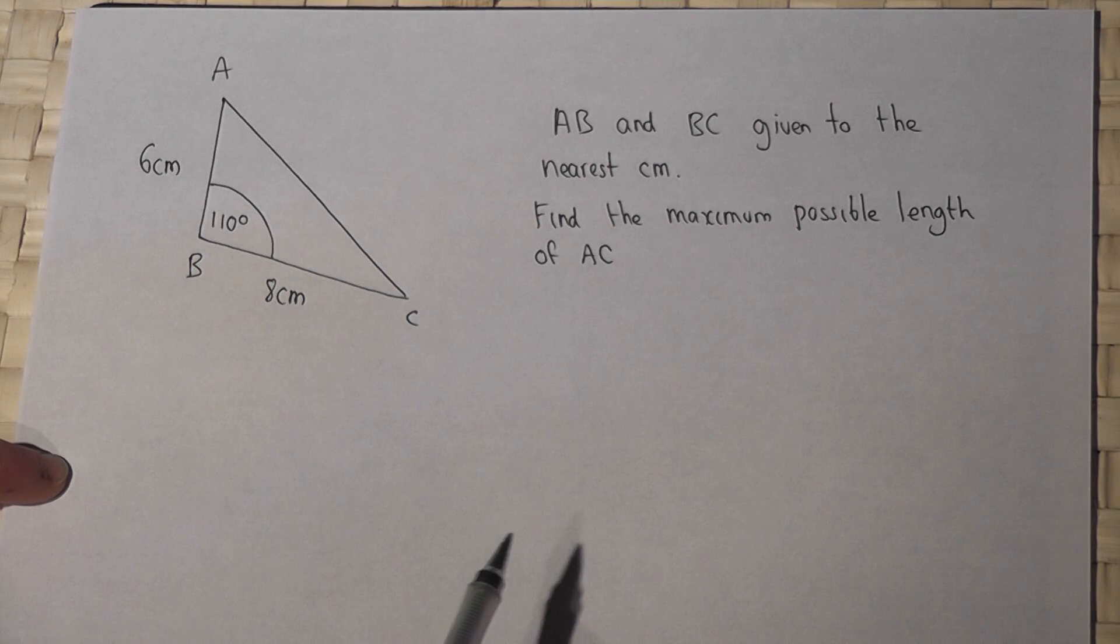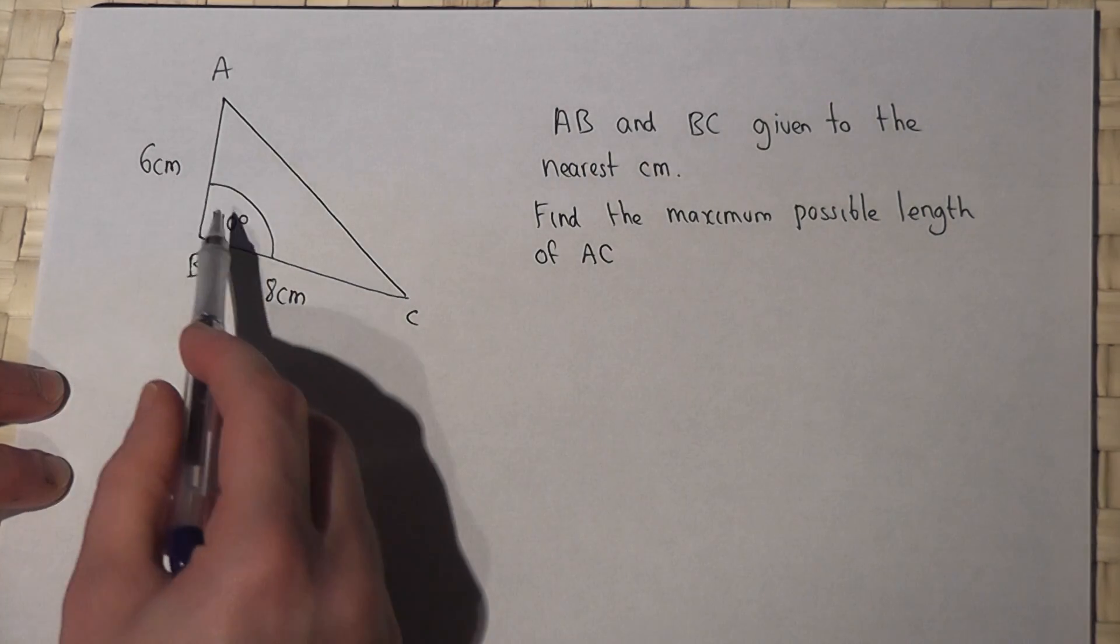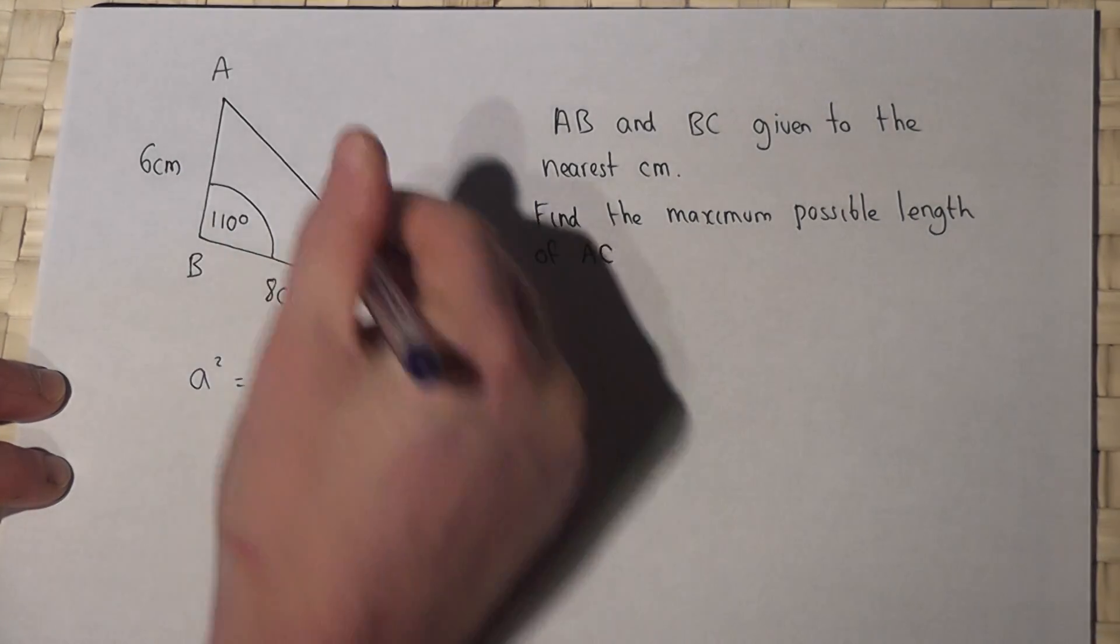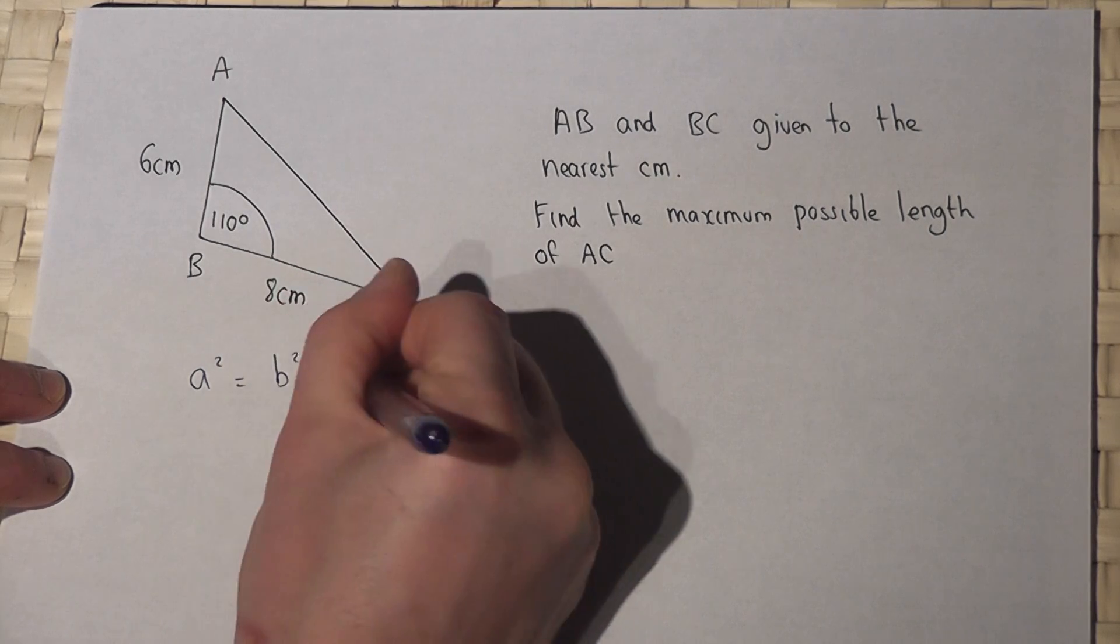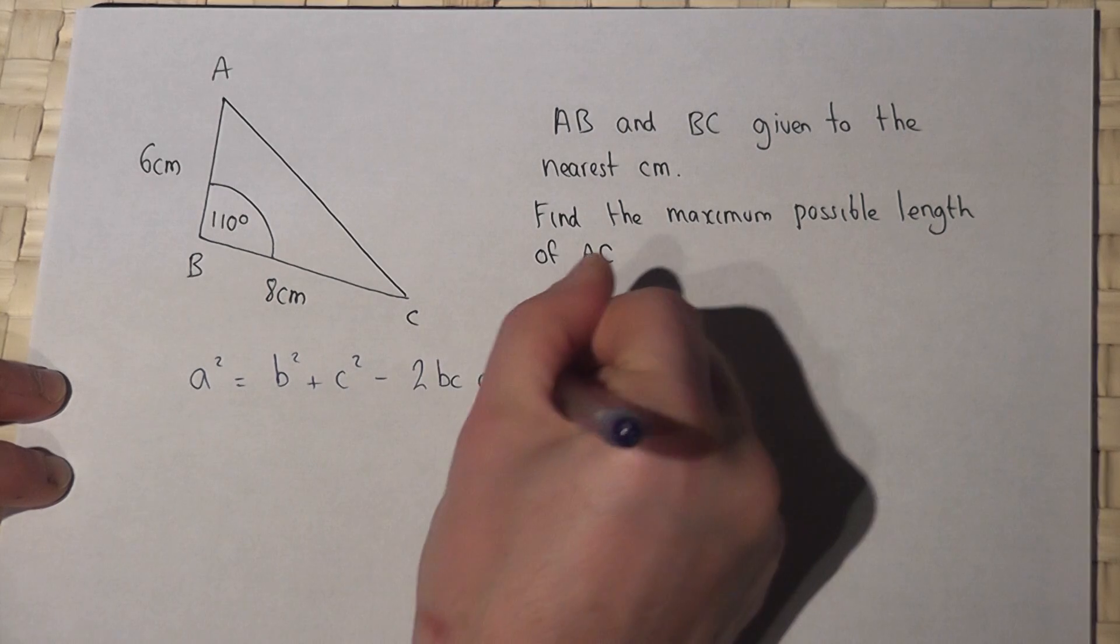To find AC we would use the cosine rule because I know side-angle-side, and the cosine rule is a² (which is the side I want) equals b² plus c² minus 2bc cos of the angle.